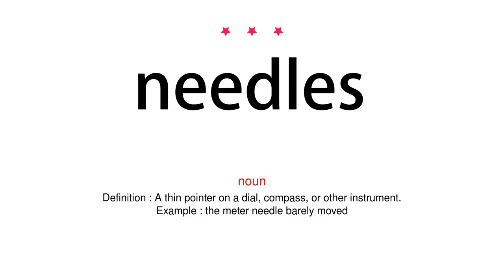Noun. Definition: A thin pointer on a dial, compass, or other instrument. Example: The meter needle barely moved.